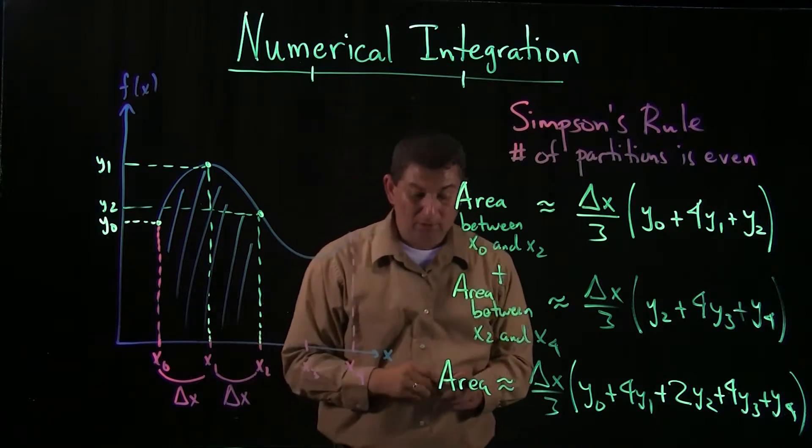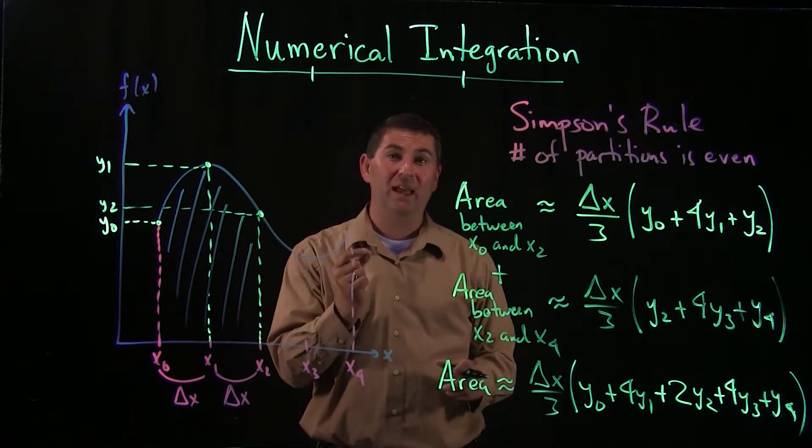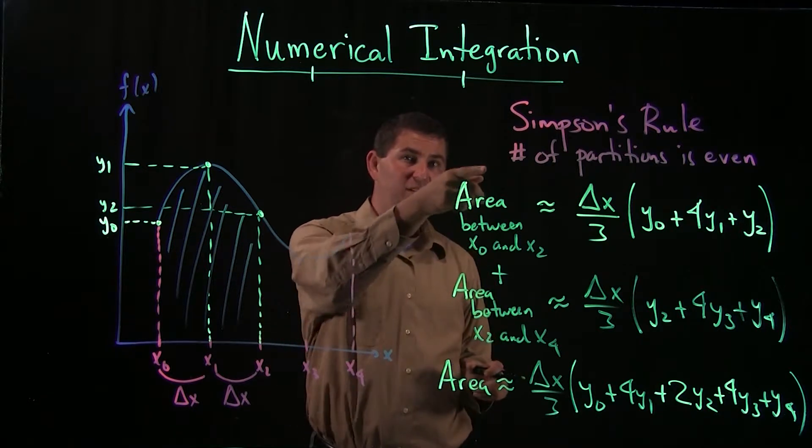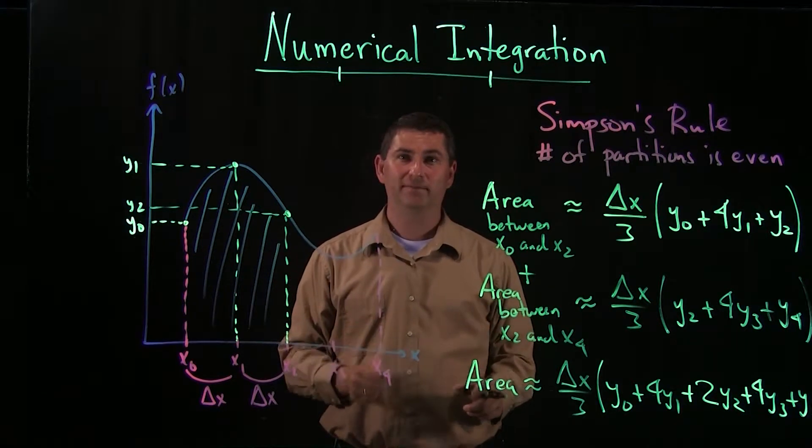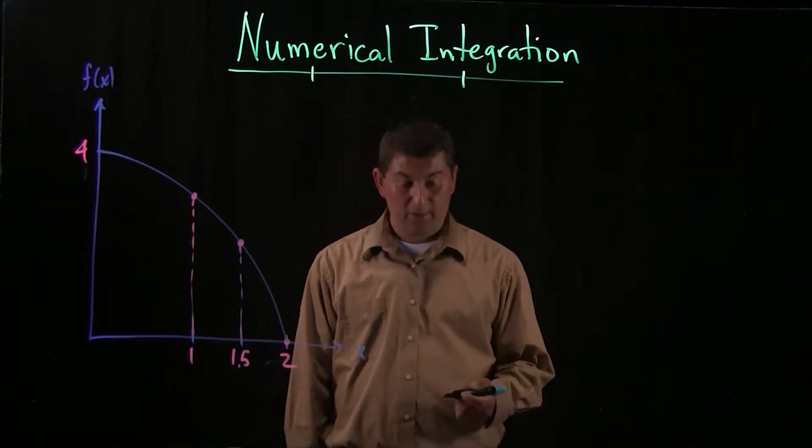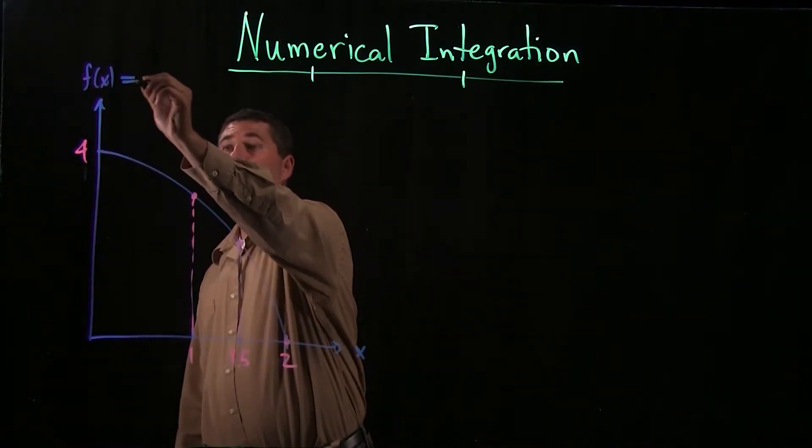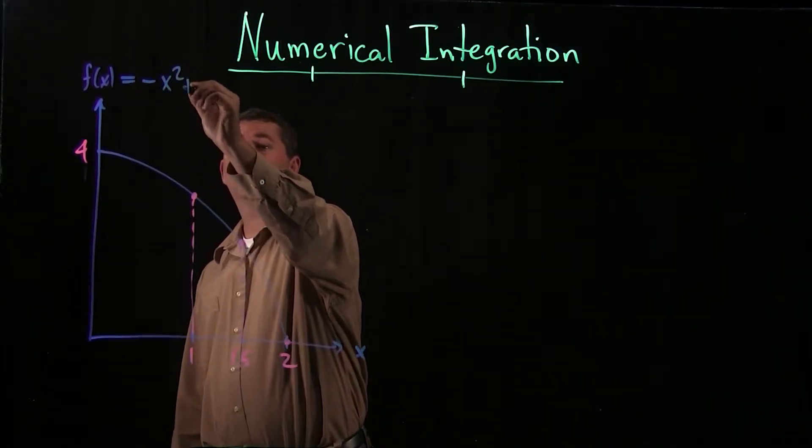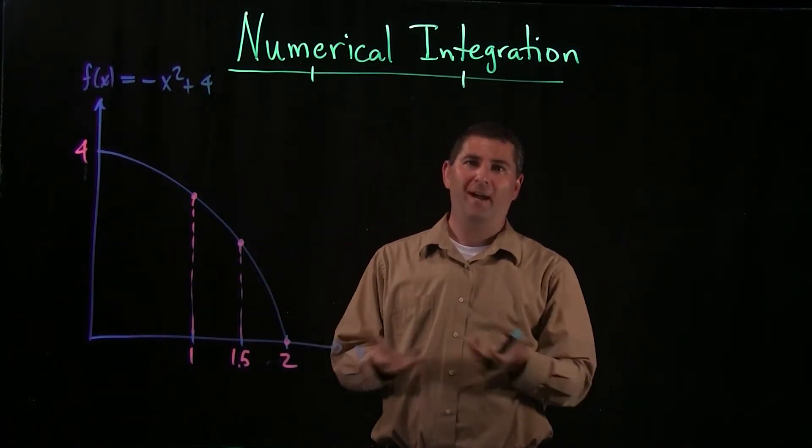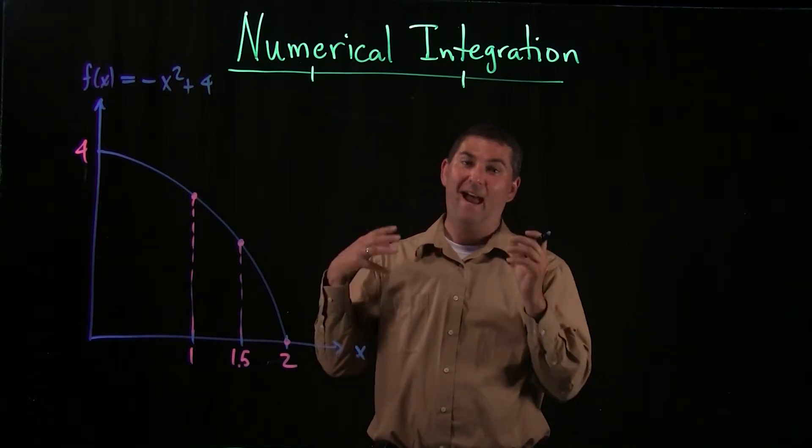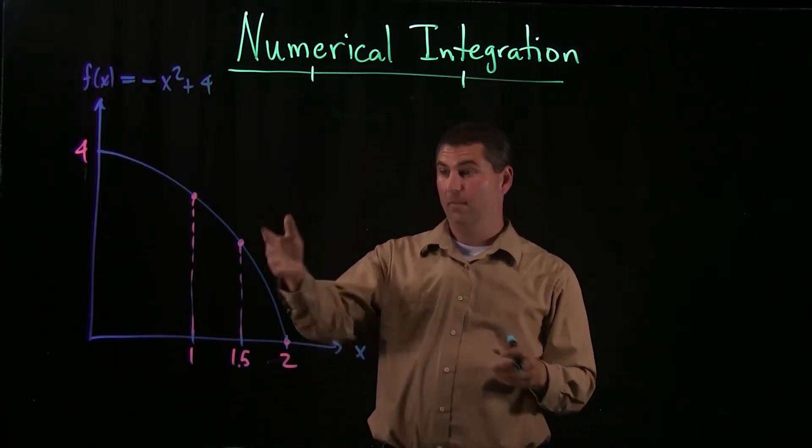All right. So let's clean this up. We'll come back. We're going to do that example from the last video again, using Simpson's rule, and make a really remarkable discovery. So you may recall we were dealing in the last video with the function negative x squared plus 4. We already know how to use a definite integral to actually compute that directly.